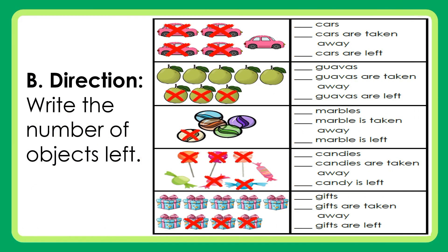Direction: Write the number of objects left. Cars — Cars are taken away — Cars are left. Guavas — Guavas are taken away — Guavas are left. Marbles — Marble is taken away — Marble is left. Candies — Candies are taken away — Candy is left. Gifts — Gifts are taken away — Gifts are left.